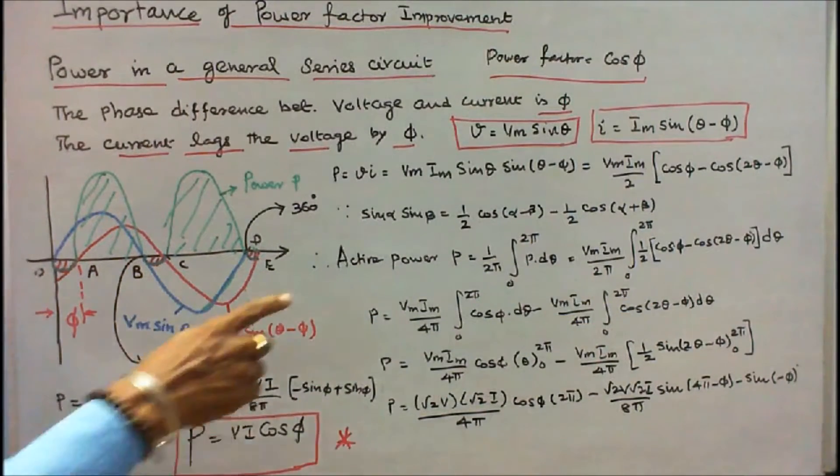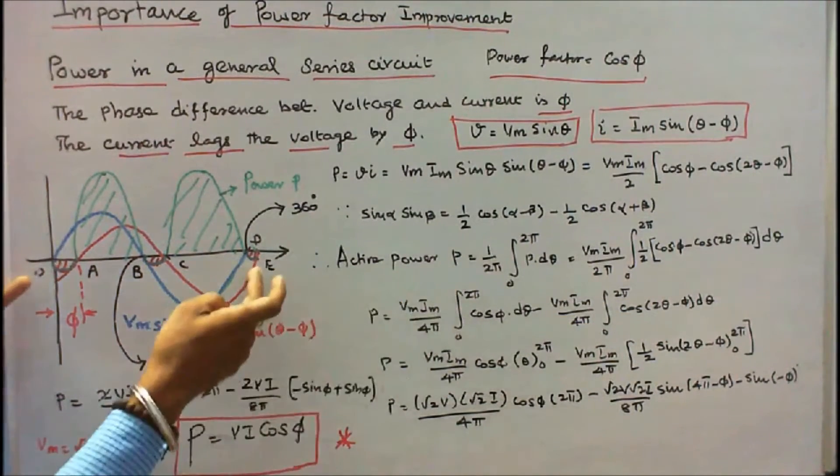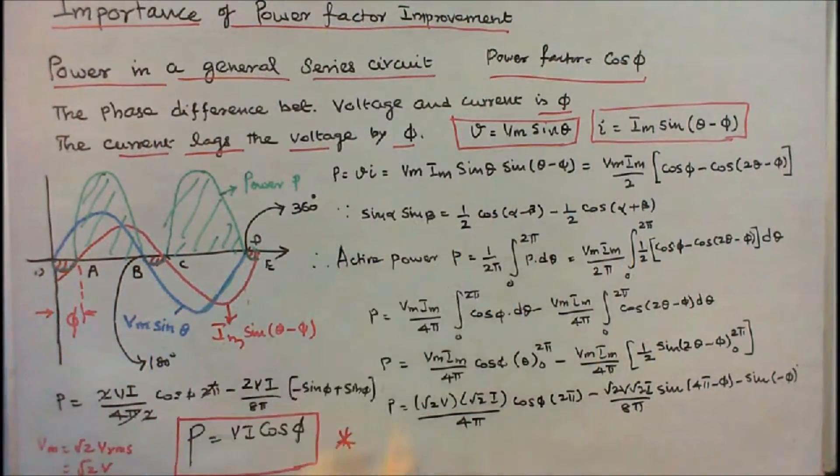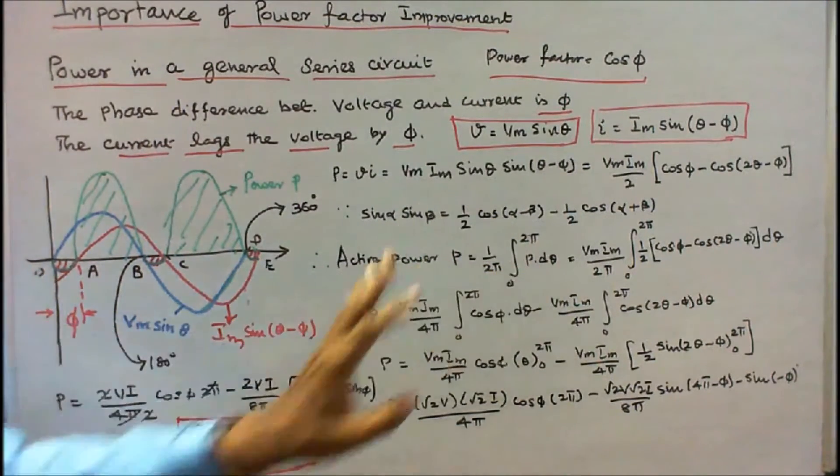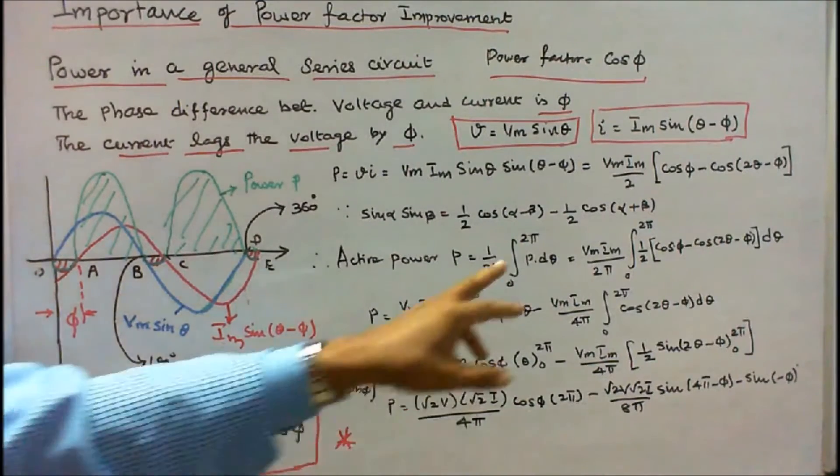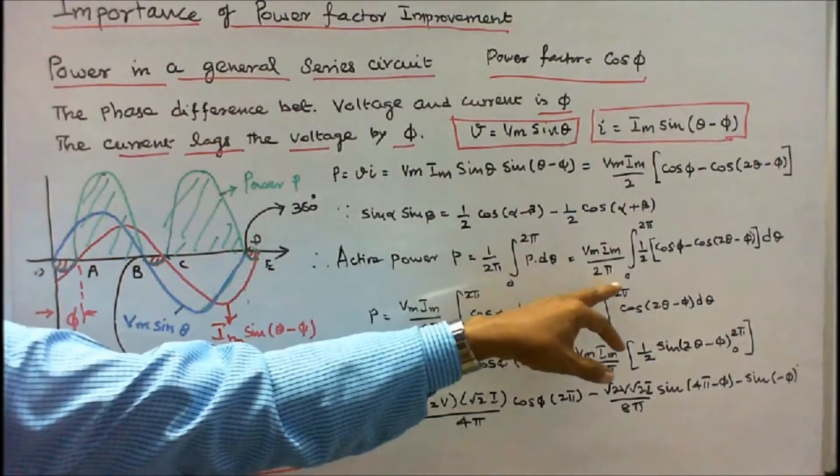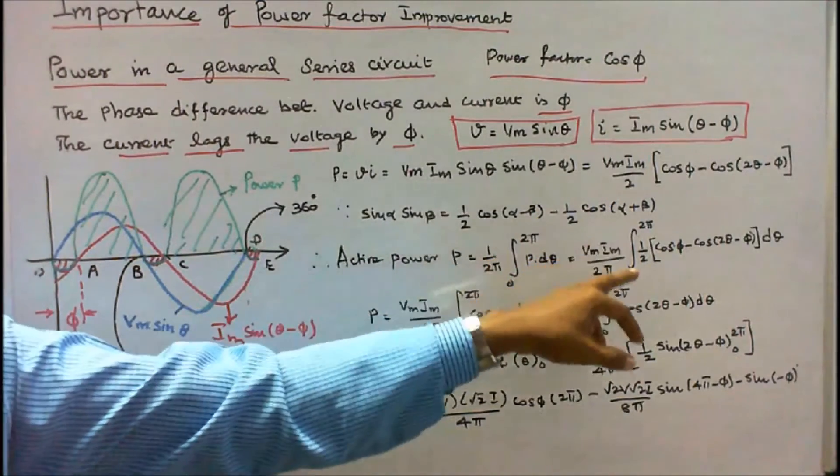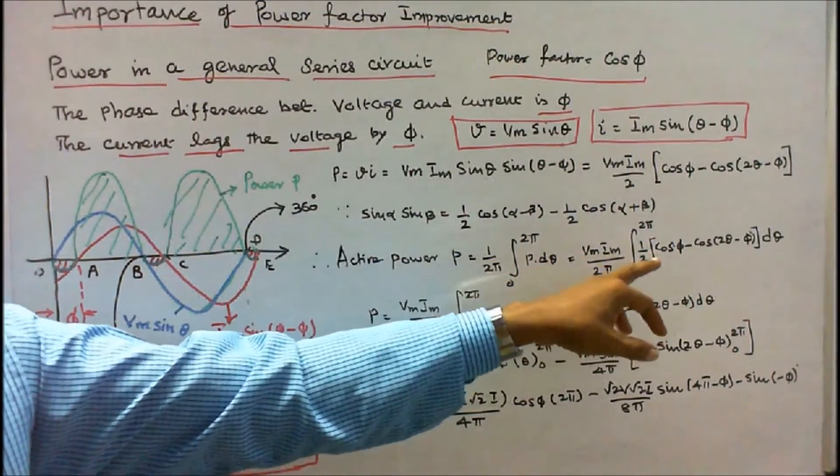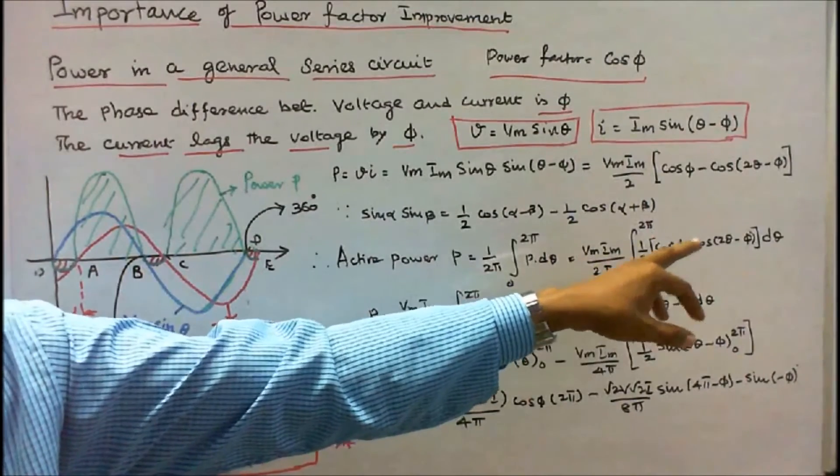Therefore, active power P is equal to (1/2π) times the integral from 0 to 2π of P dθ. That is equal to (Vm Im / 2π) times the integral from 0 to 2π of (1/2) times [cos φ minus cos(2θ - φ)] dθ.